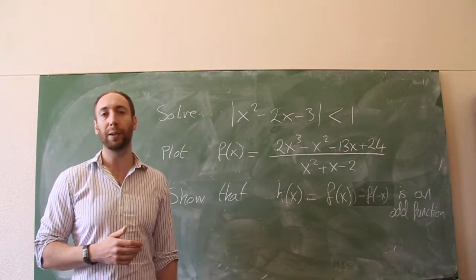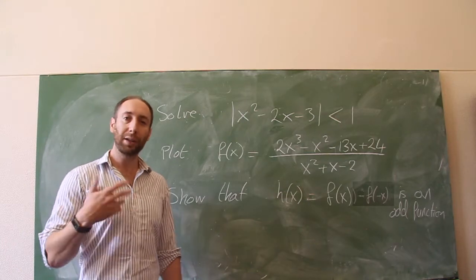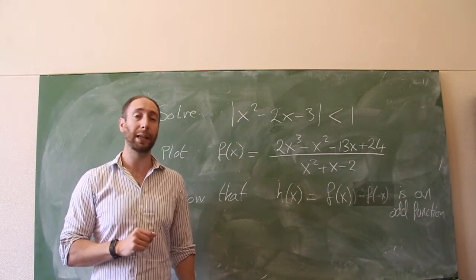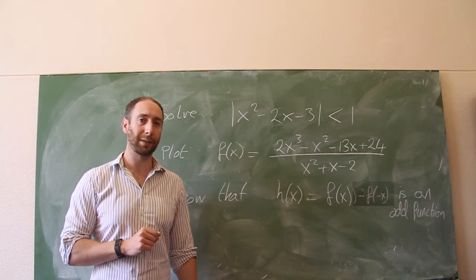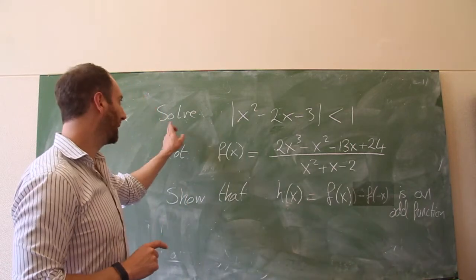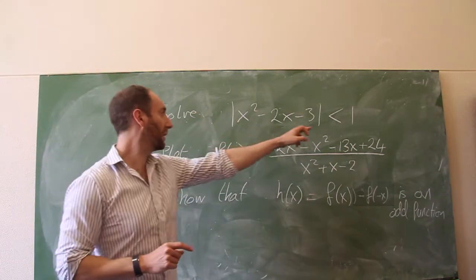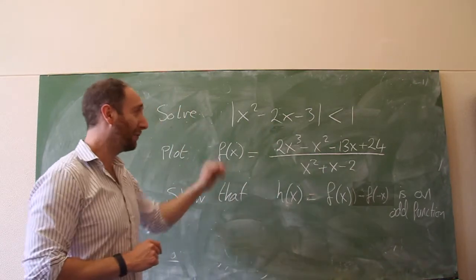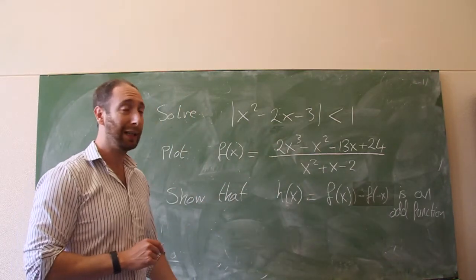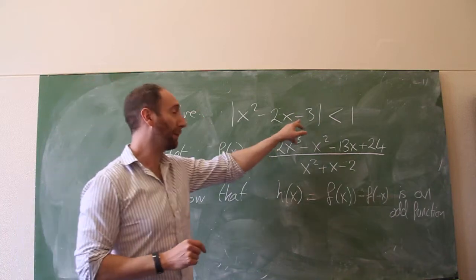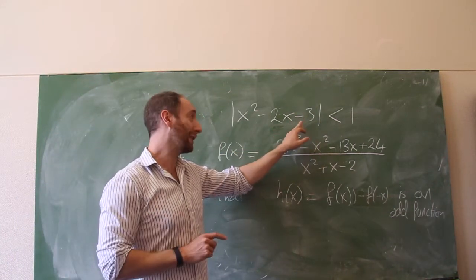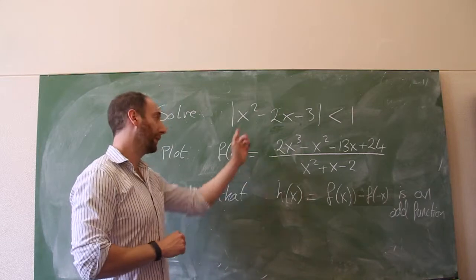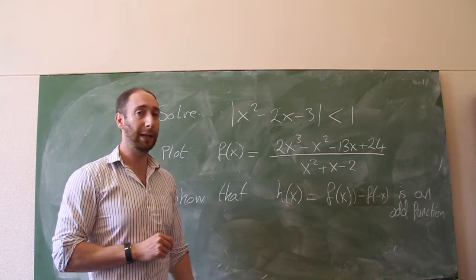So I wanted to run through a few different problems and just give you some intuition as to the way that I think you should be thinking about these things. One thing I need to point out is that the inequality we spoke about last time — I actually wrote it incorrectly. The very first line I had a plus 3, and some of you noticed that it should have been a minus 3. When I factored it, it should have been a minus 3 there.